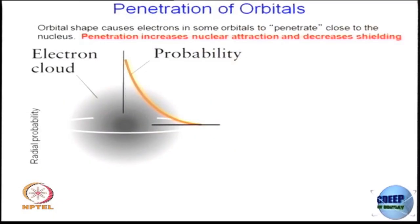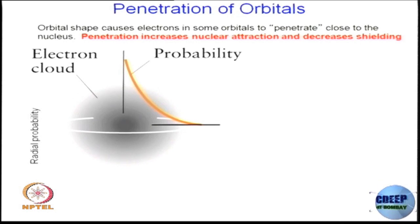Now, this is something about how the electrons are distributed outside the nucleus, or the probability of finding an electron. This can be more clearly taught in a physical chemistry course. Here I will give you just a brief idea — it may not be exactly clear, but it will give you an idea to go forward.